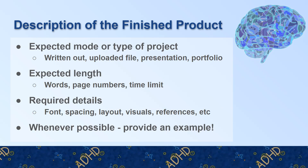It is key to have a description of the finished product. It is very hard for people with neurodivergence to get from 'this is sort of what I want you to do' to 'here is what it looks like at the end.' So be very clear about what you want. An expected mode is important: Is it going to be written out? Is it a file? Is it emailed, uploaded, a presentation, a portfolio? What is it going to physically or digitally look like? And how long should it be?